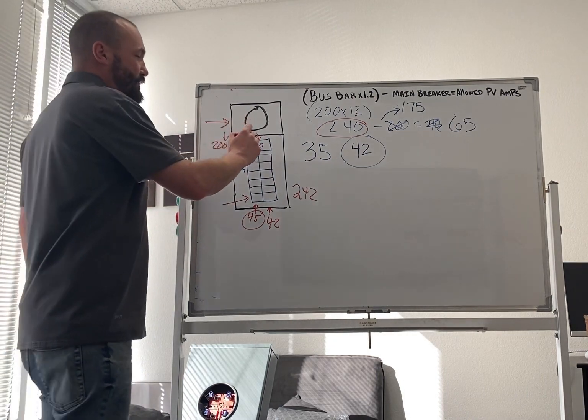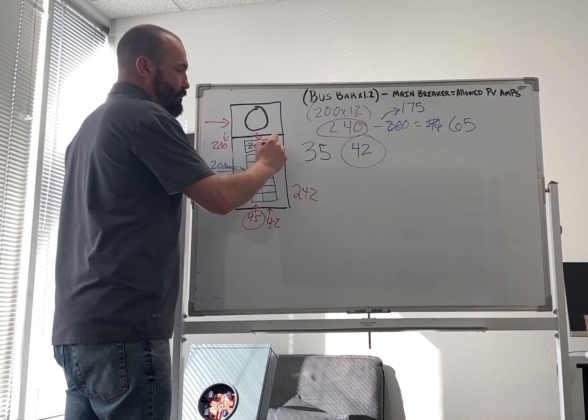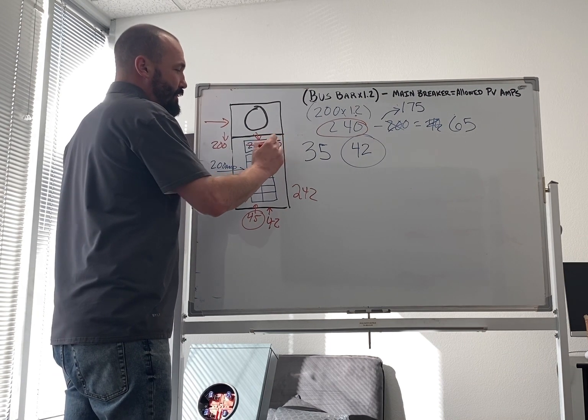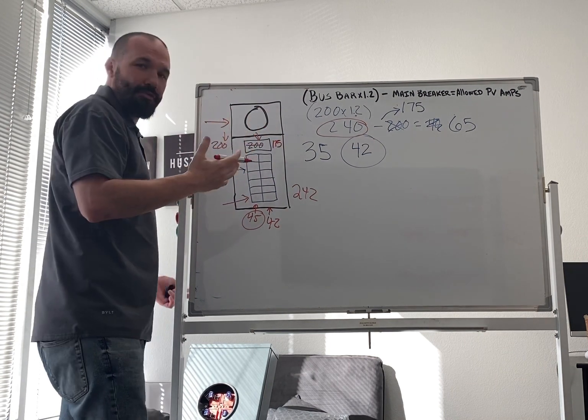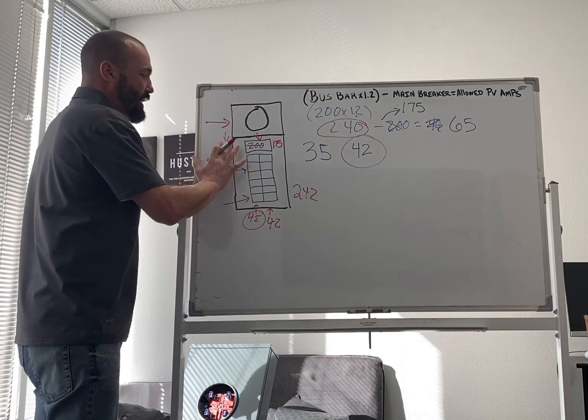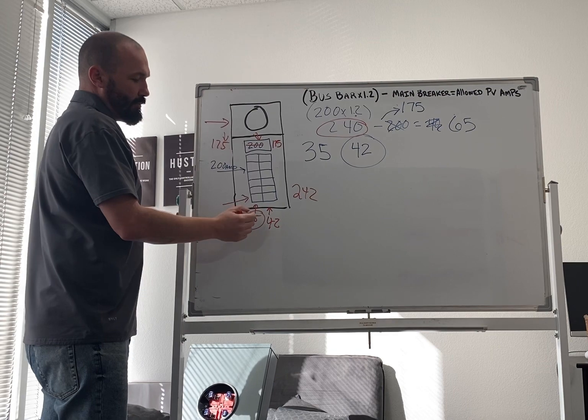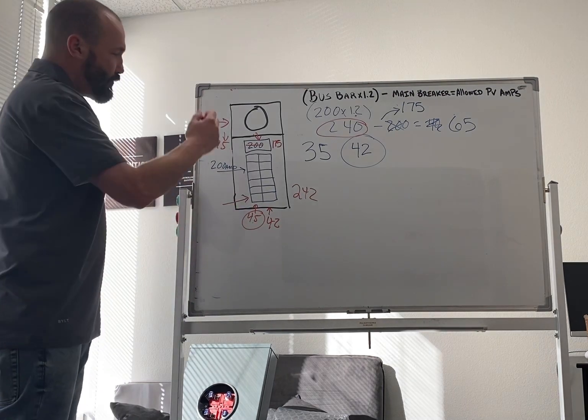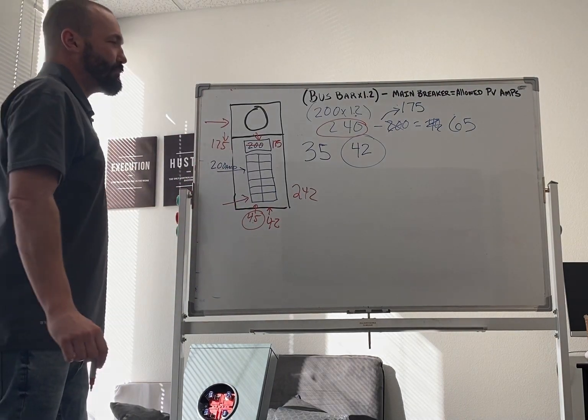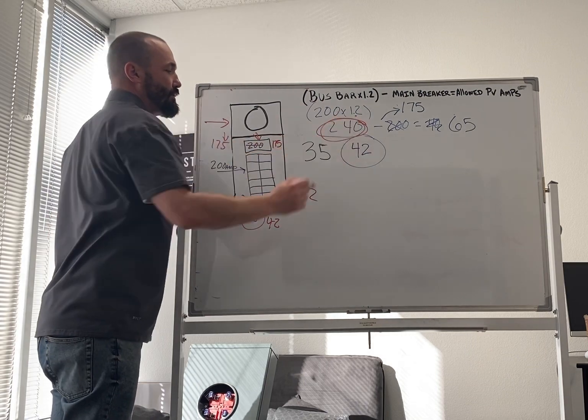So what you do is now that you've derated that to a 175, it's only going to allow 175 amps. So I can't pull 200 through there. The most I can pull is 175 plus my 42 over here. That's going to put me below the safe rating.